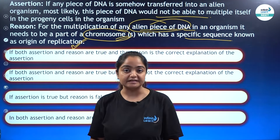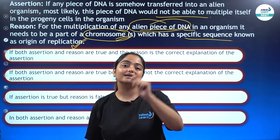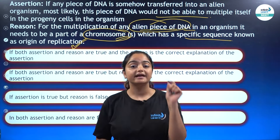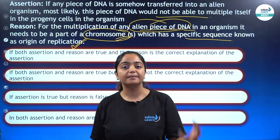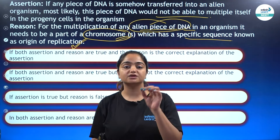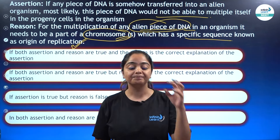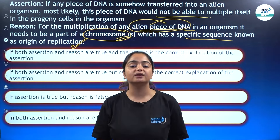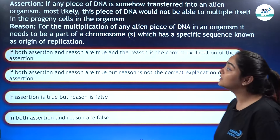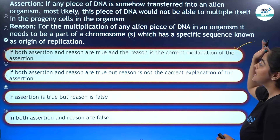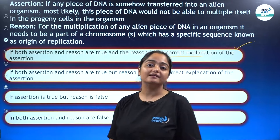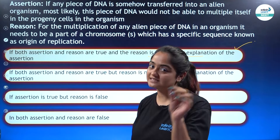We need an ori specifically if we are introducing a foreign DNA into any host. If we are introducing any foreign DNA into the host, we add it into the vector, and one of the major factors necessary for a vector is origin of replication. Until and unless a foreign DNA does not have a specific sequence — the origin of replication — that DNA will not be able to multiply itself. So both assertion and reason are absolutely correct and the reason is the correct explanation of the assertion. That's how we are done with the first question.